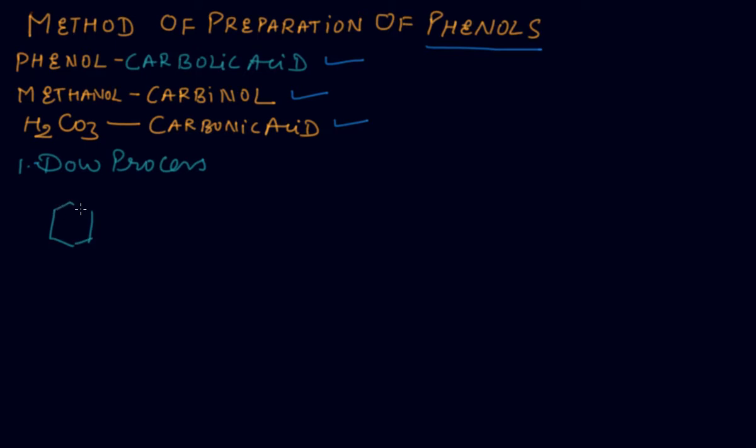You must take care as we have done earlier in haloarene. You have to take this one with the nucleophile NUH and you are aware that generally chlorobenzene will not give the reaction with NUH. So you must take that 623 Kelvin temperature and 300 atmosphere pressure. You must maintain this one and then we will get that is the phenol.